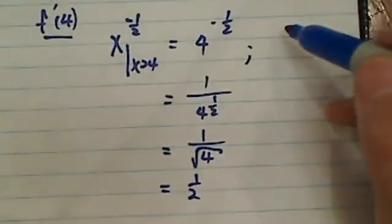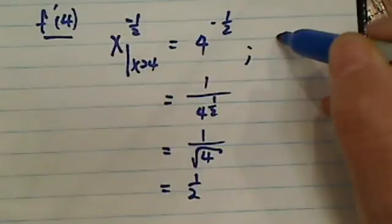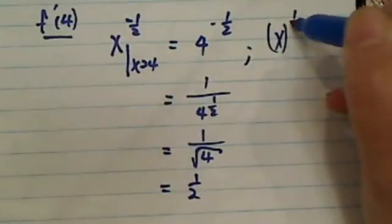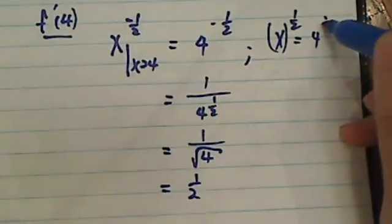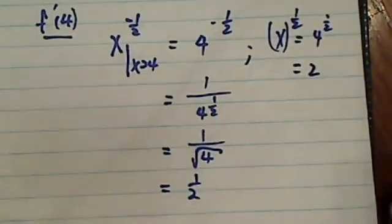And so when you have, let's see, another thing you were supposed to do is x to the half. This one is easy when x equals 4: 4 to the half is really just 2.